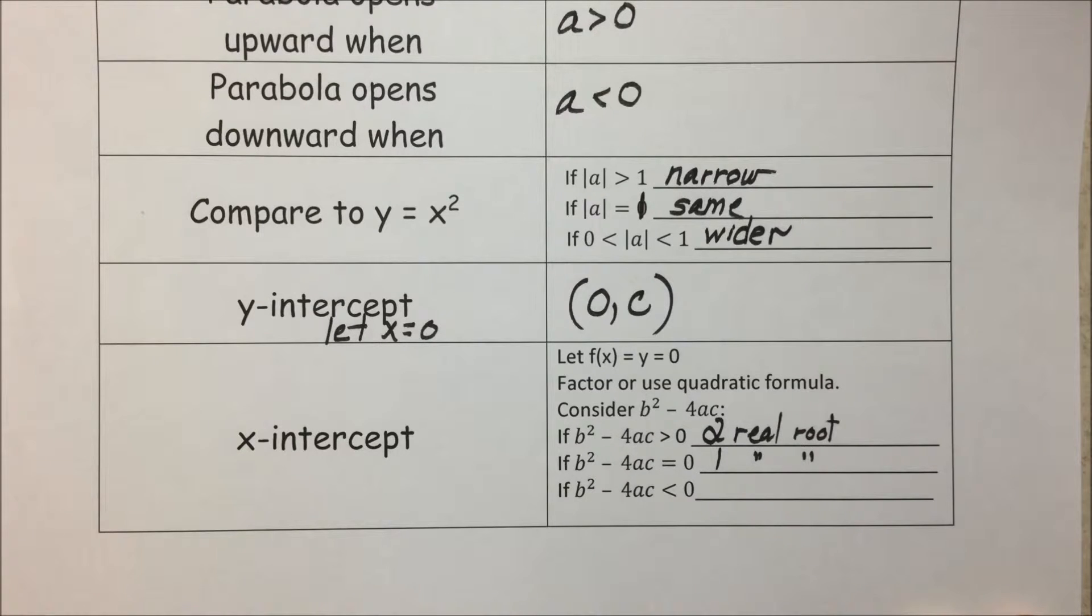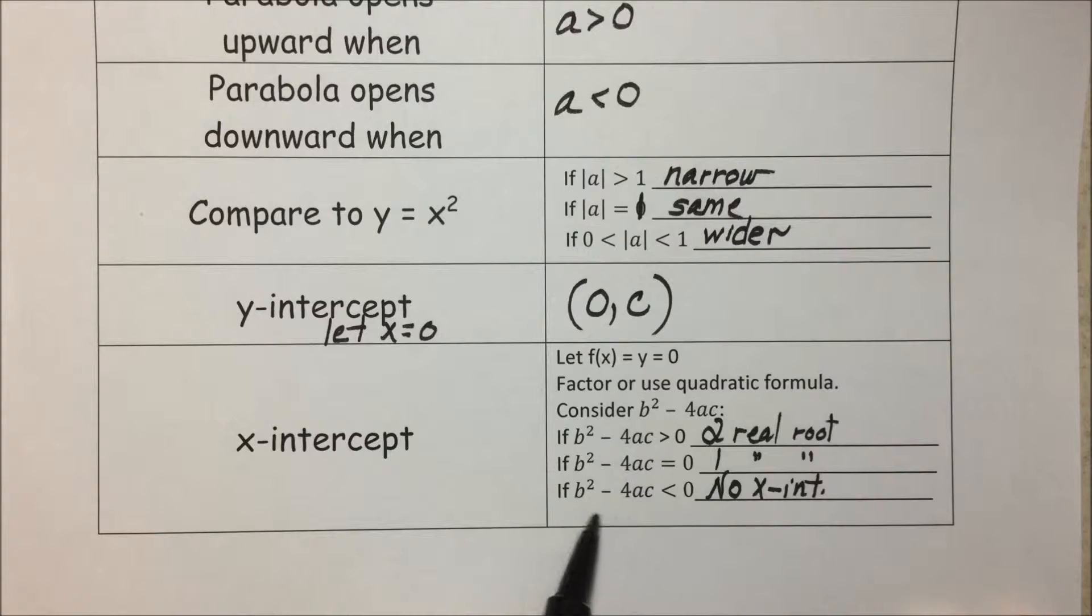Well we're graphing only real numbers, which means in terms of our graph, we would have no x-intercept. The parabola would either open above the x-axis or it would open below the x-axis with no intercept. In terms of solutions or roots, we would have imaginary conjugates, and again, means we aren't going to graph those.